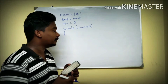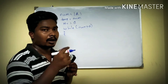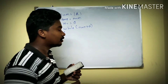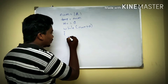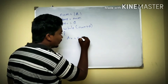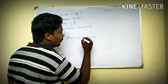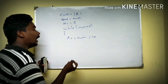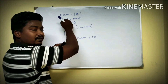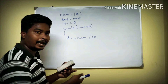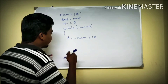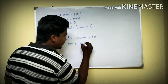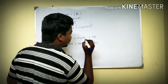Inside the loop, we have two division operations. The first is modulus division, which gives the remainder. The second is normal division, which gives the quotient. So we take the remainder of num1 divided by 10 and add it into the reverse. The formula is: reverse equals reverse into 10 plus the remainder.